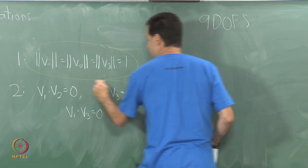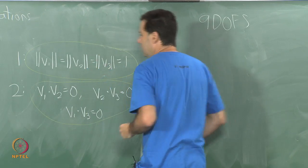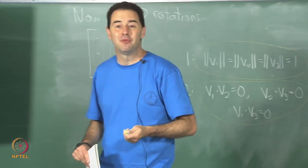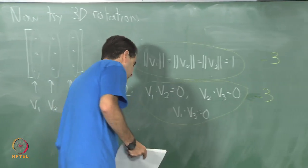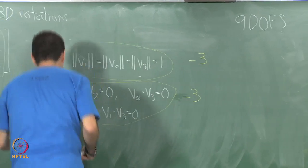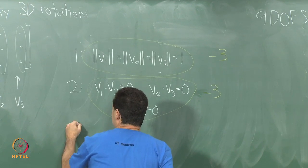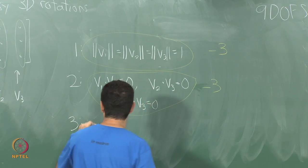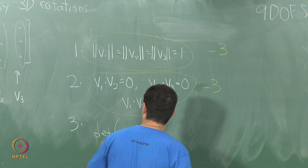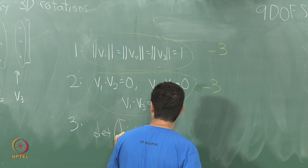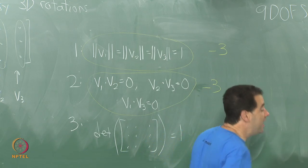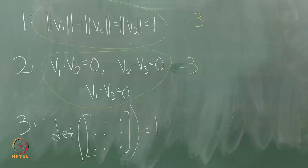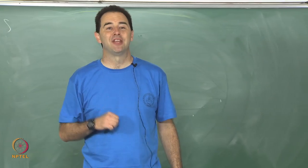We still have the third condition which is we do not want mirror images. We need to have the determinant of this big 3 by 3 matrix be equal to 1. Again, this is not going to drop the degrees of freedom, this is going to keep it the same. It is just going to eliminate half of the cases.